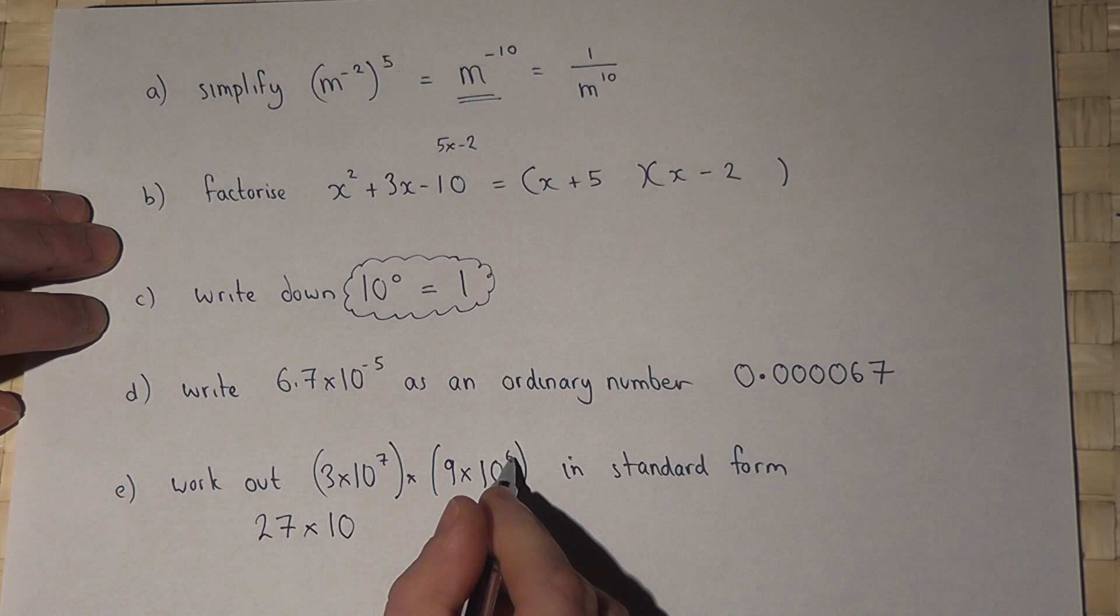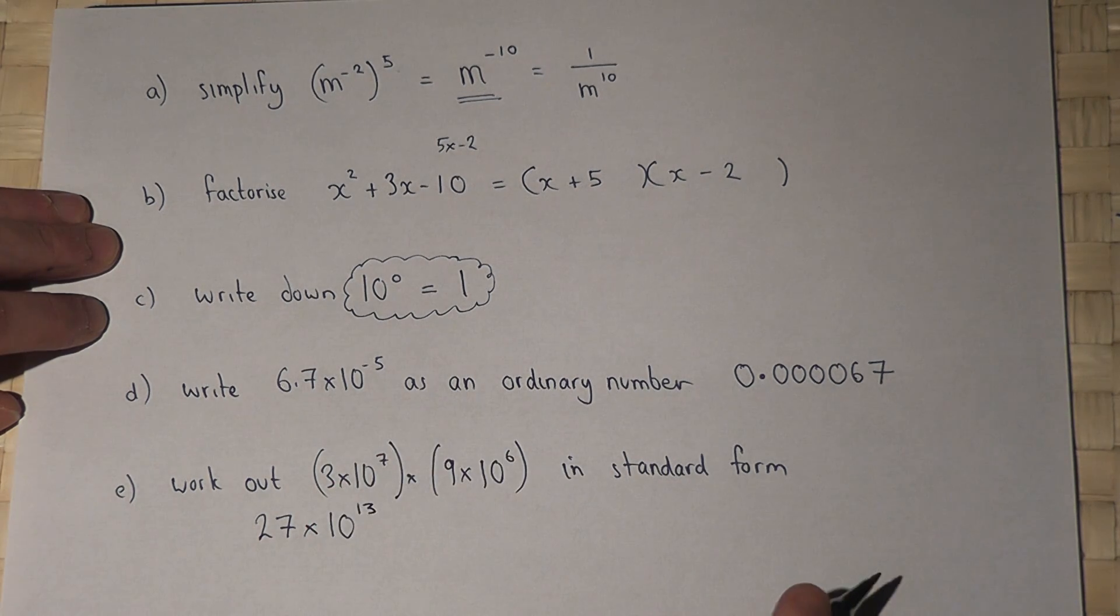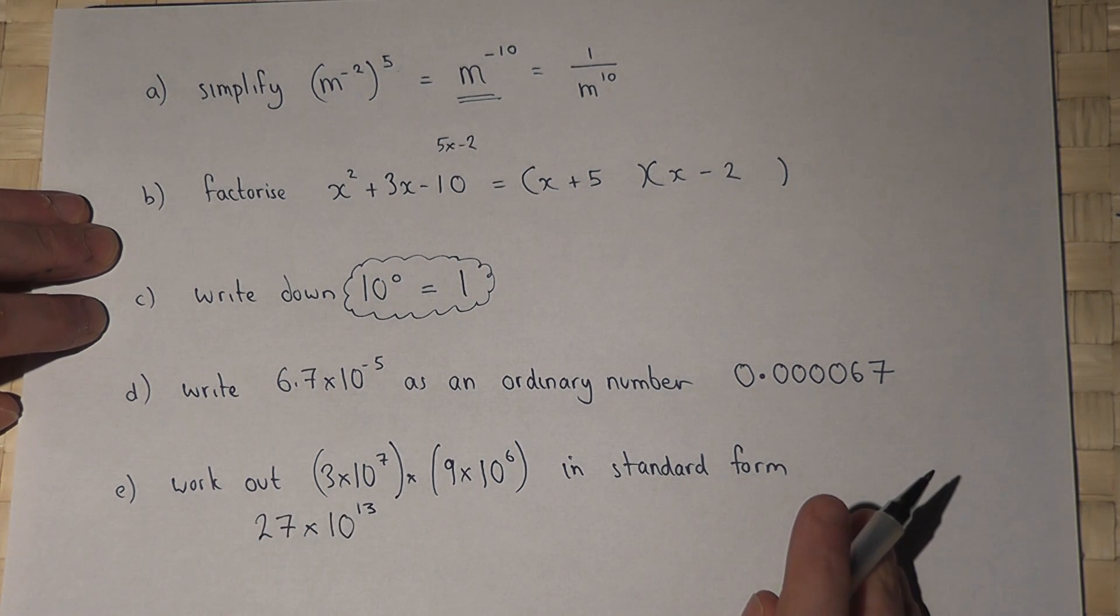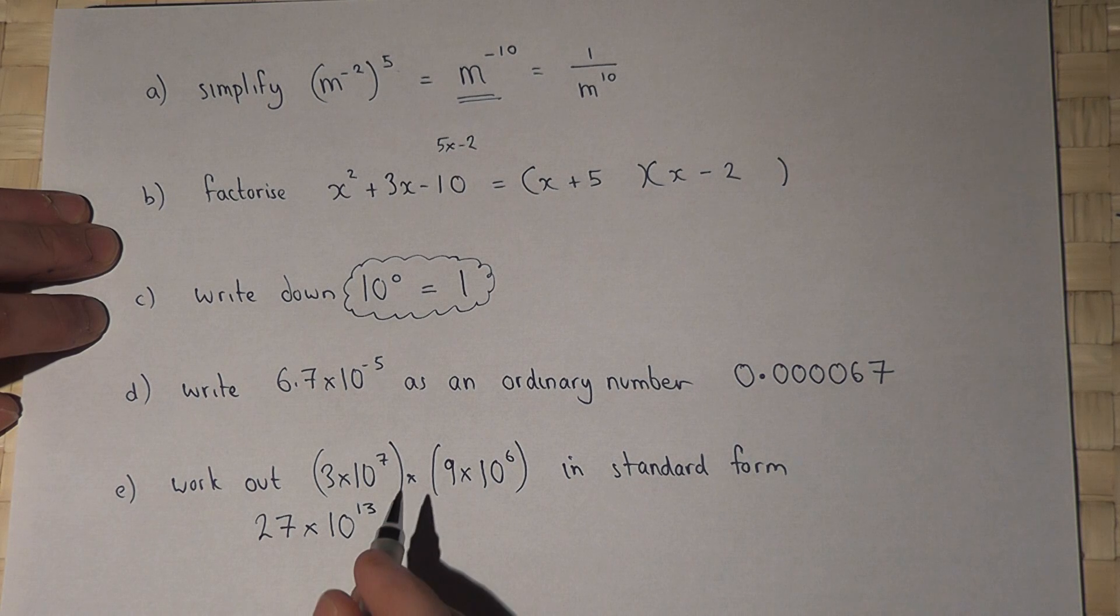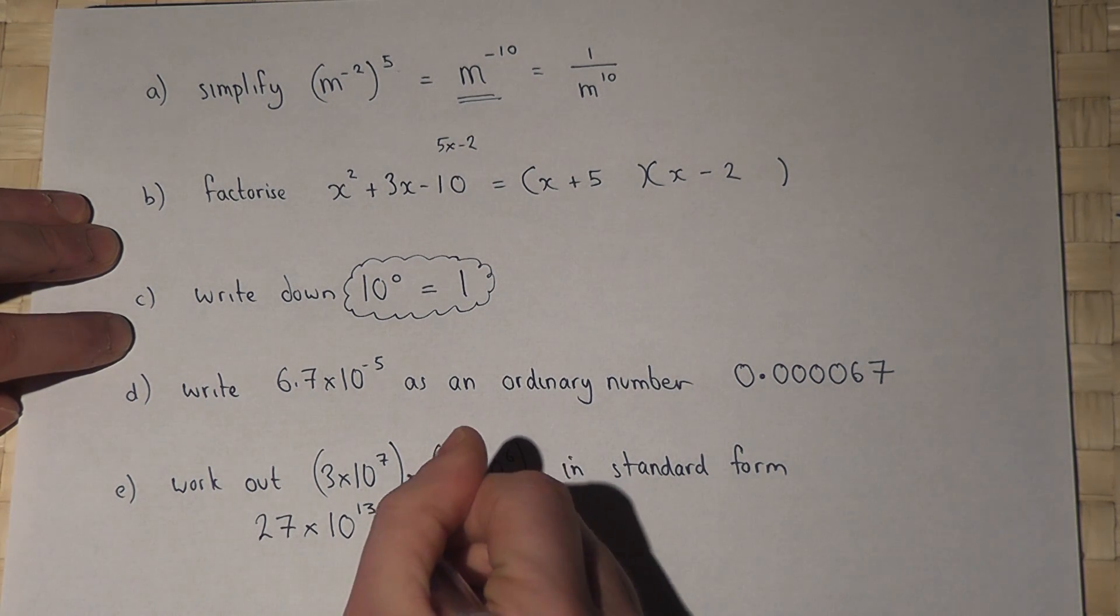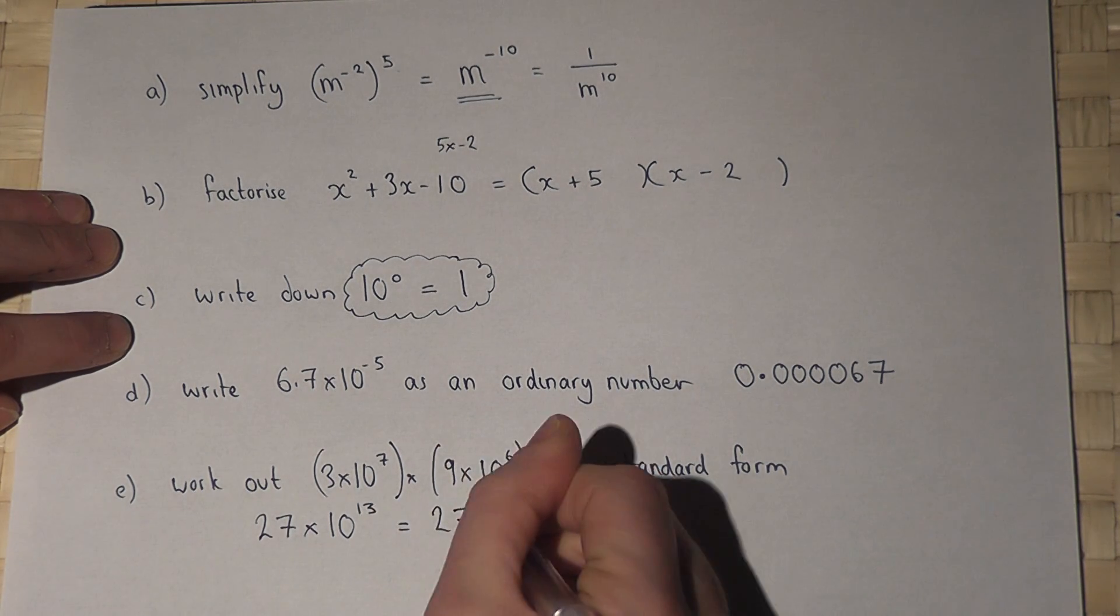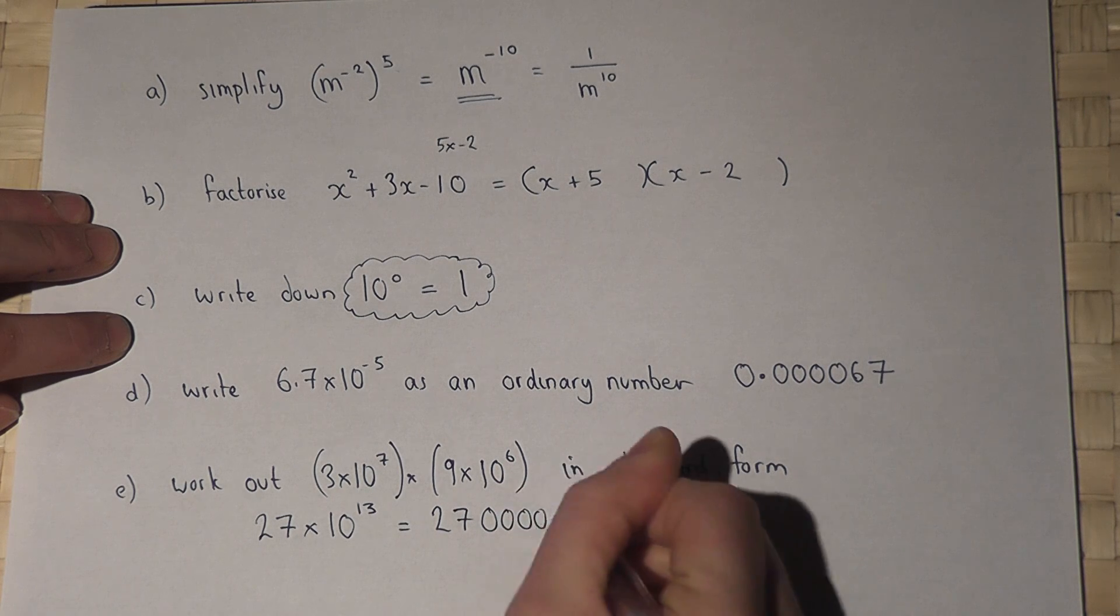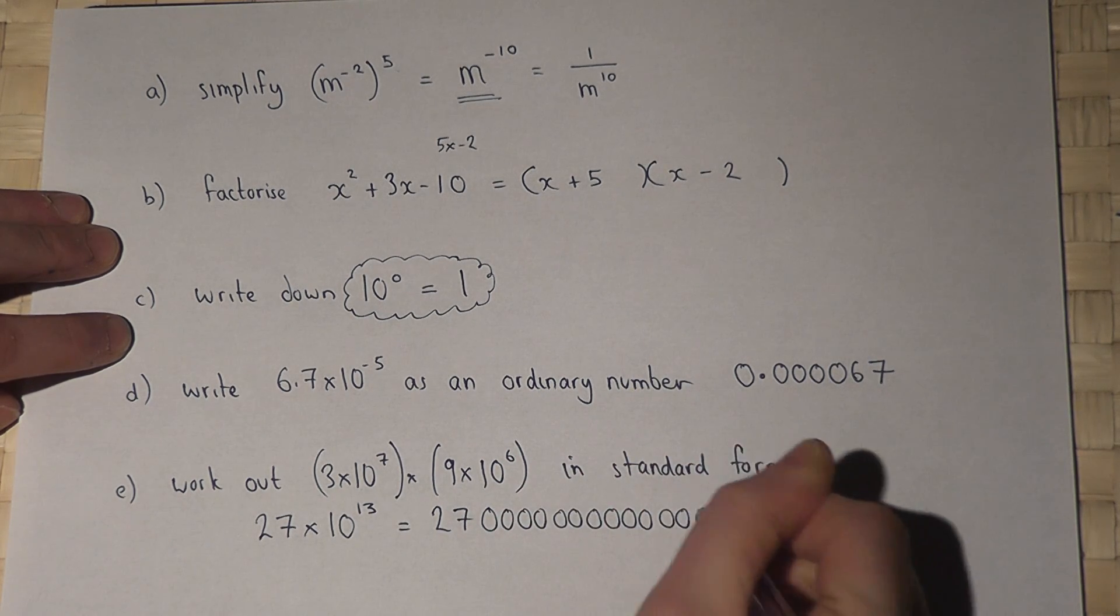Now it asks for the answer in standard form, and this is not quite in standard form. However, if in doubt, you could write this out longhand, so 27 with thirteen zeros at the end.